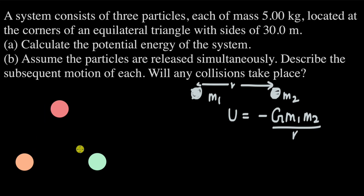Here the system has 3 particles. So the total potential energy will be the sum of potential energy of each pair: the potential energy of mass 1 and 2, plus the potential energy of mass 2 and 3, plus the potential energy of mass 3 and 1.